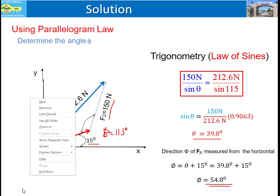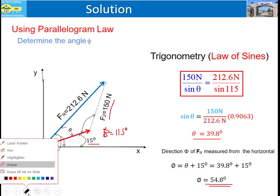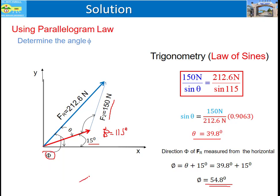The resultant vector can be represented in polar form as 212.6 Newtons at 54.8 degrees from the horizontal x-axis. This is the final answer. Thank you for watching.